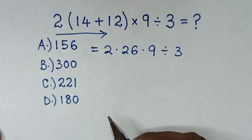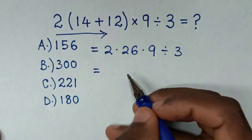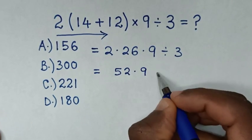Then working from left to right, 2 times 26 is 52, then times 9, divided by 3.